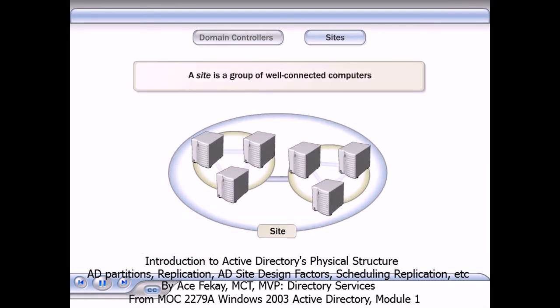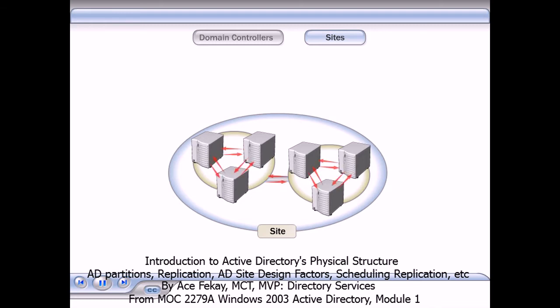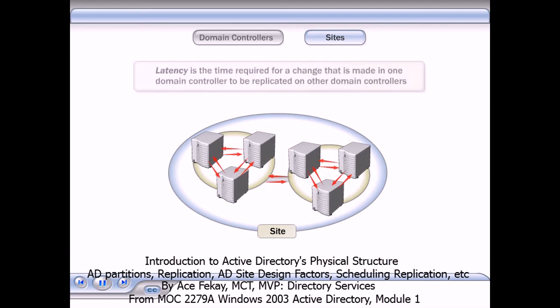A site is a group of well-connected computers. After sites are established, domain controllers within a site communicate frequently. This communication minimizes latency within the site. Latency is the time required for a change made on one domain controller to be replicated on other domain controllers.